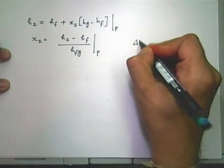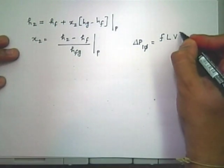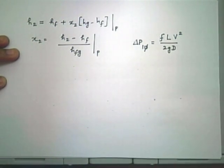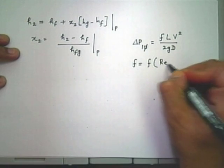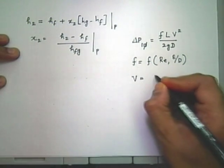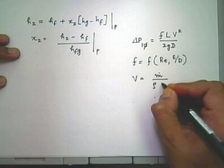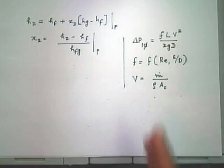Why am I bringing all this? In any flow situation, one of the basic calculations we will end up doing is delta p — pressure drop. For single phase, pressure drop is F times L times V-squared divided by 2gD. F is a function of Reynolds number and roughness. V is given by m-dot divided by rho times cross-sectional flow area. These definitions are correct.